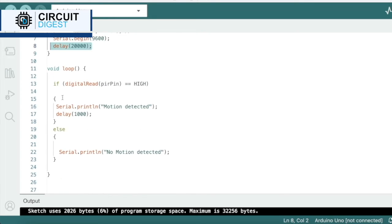Let's move on to the void loop section here. We can see we have an if else condition statement here. So, we read the data which comes from the PIR sensor and compares it. If the data coming from the sensor is high, we'll print motion detected on the serial monitor and give a delay of 1000.